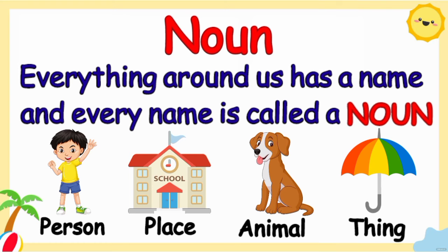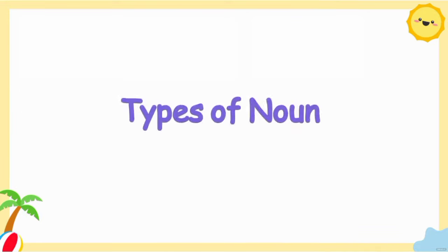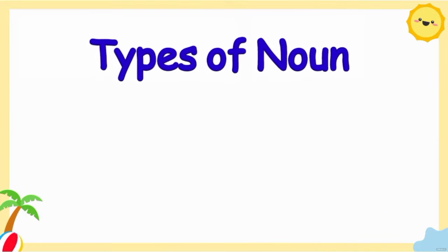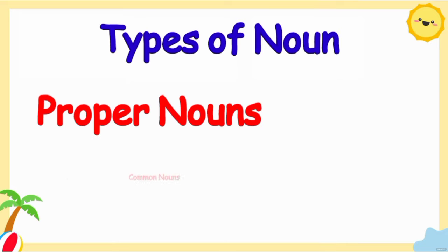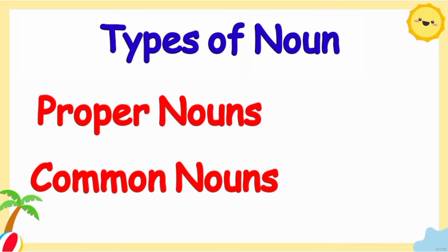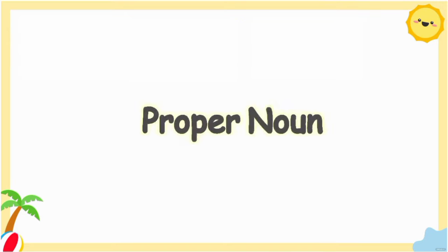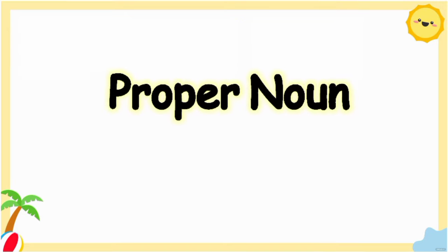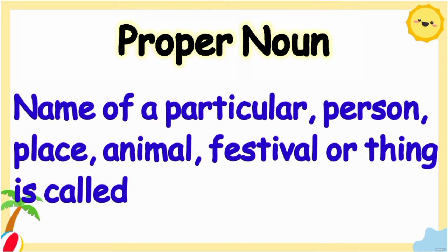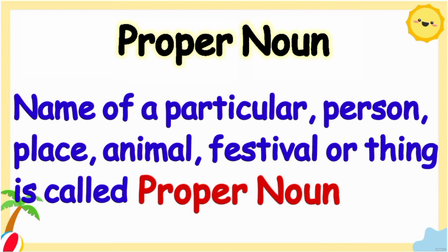Name of any person, place, animal, or thing is called a noun. In this video, we learn about proper nouns and common nouns. What is a proper noun? Any name of a particular person, place, animal, festival, or anything is called a proper noun. Since proper nouns are special names, they always begin with a capital letter. For example: